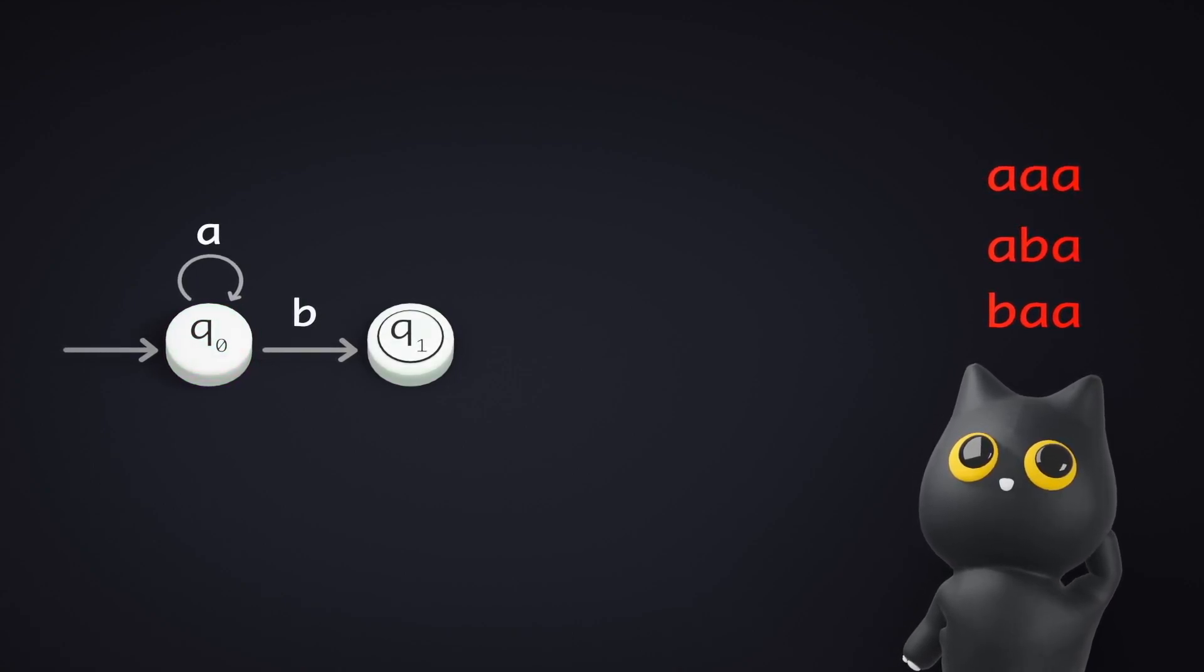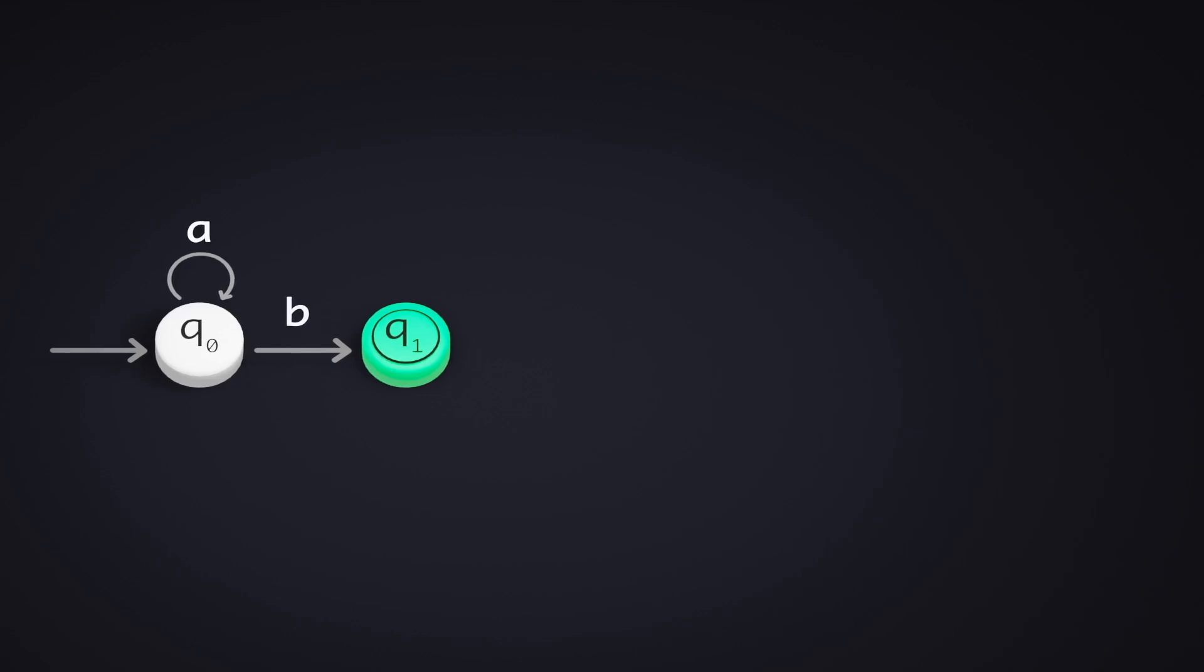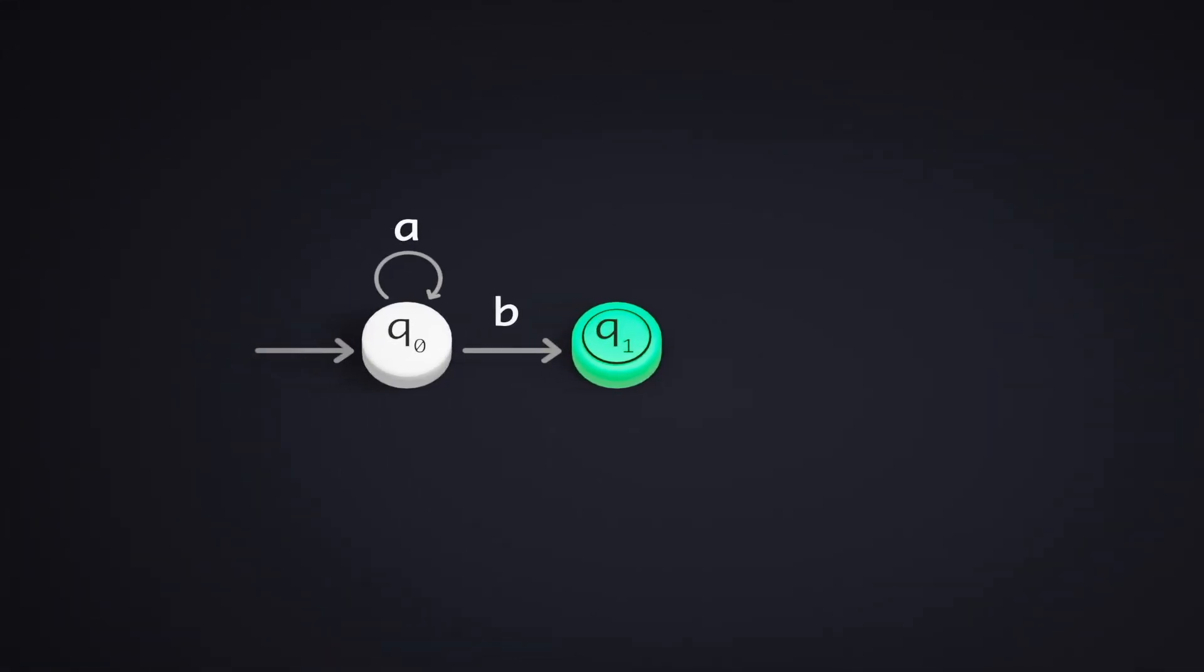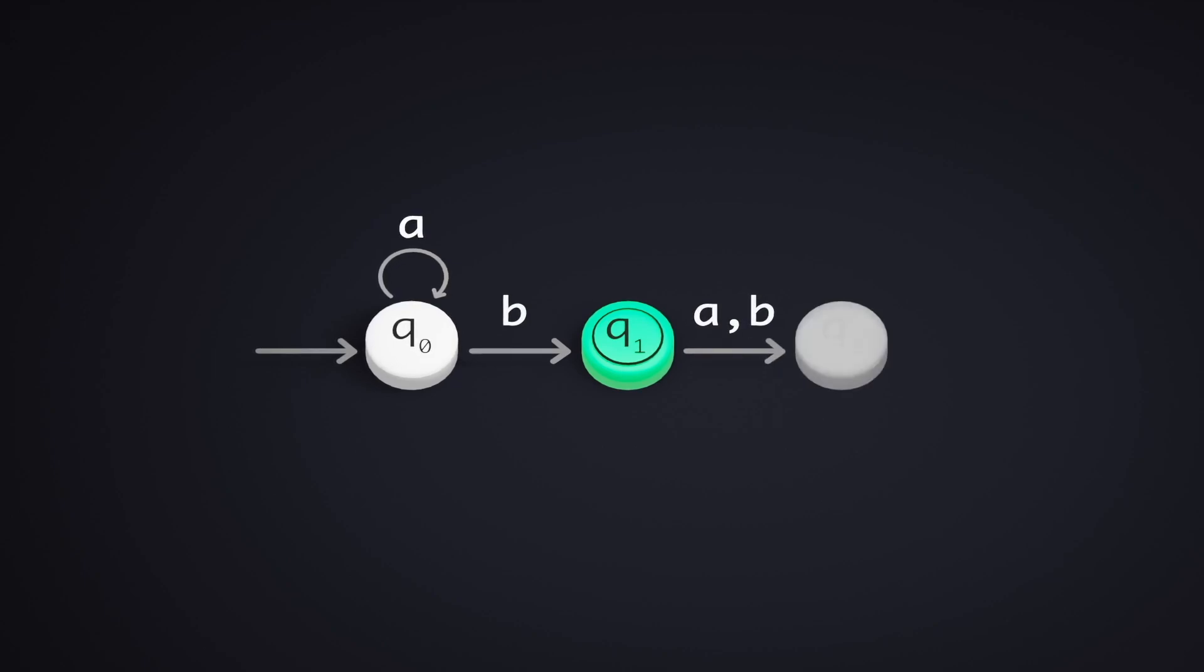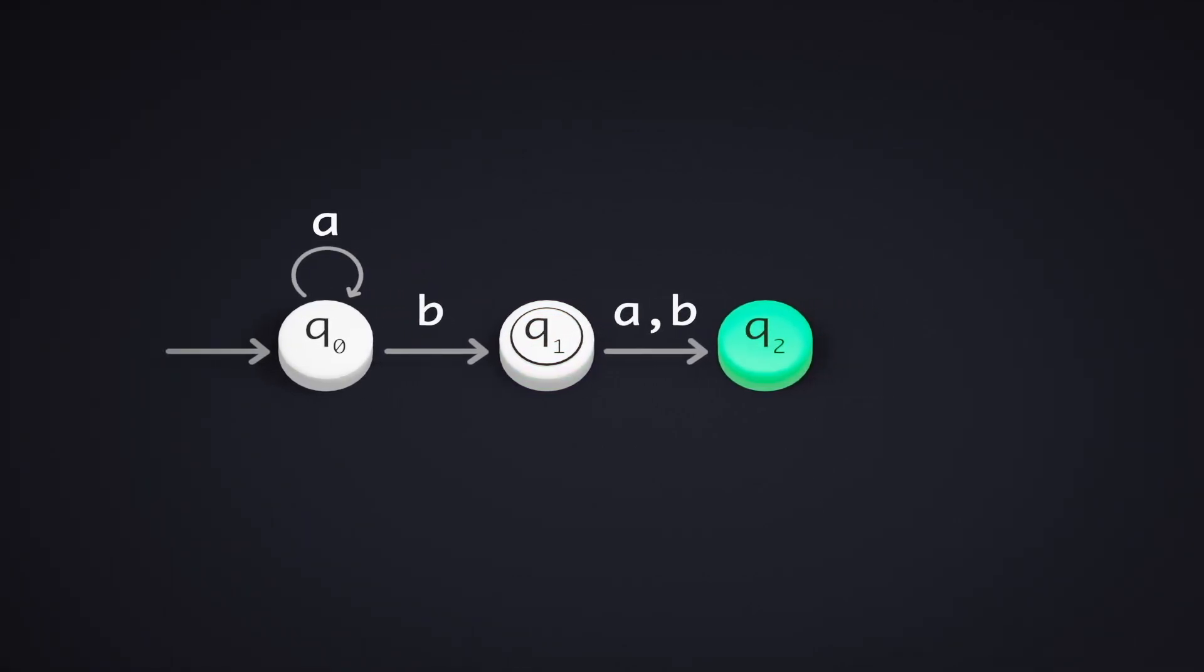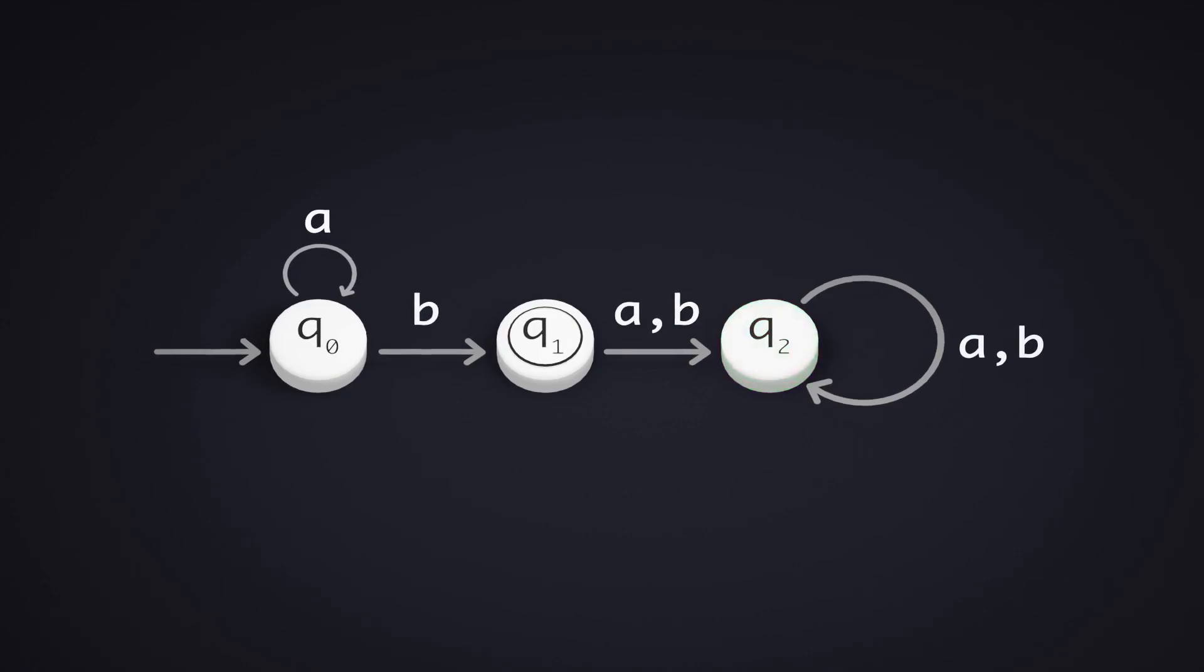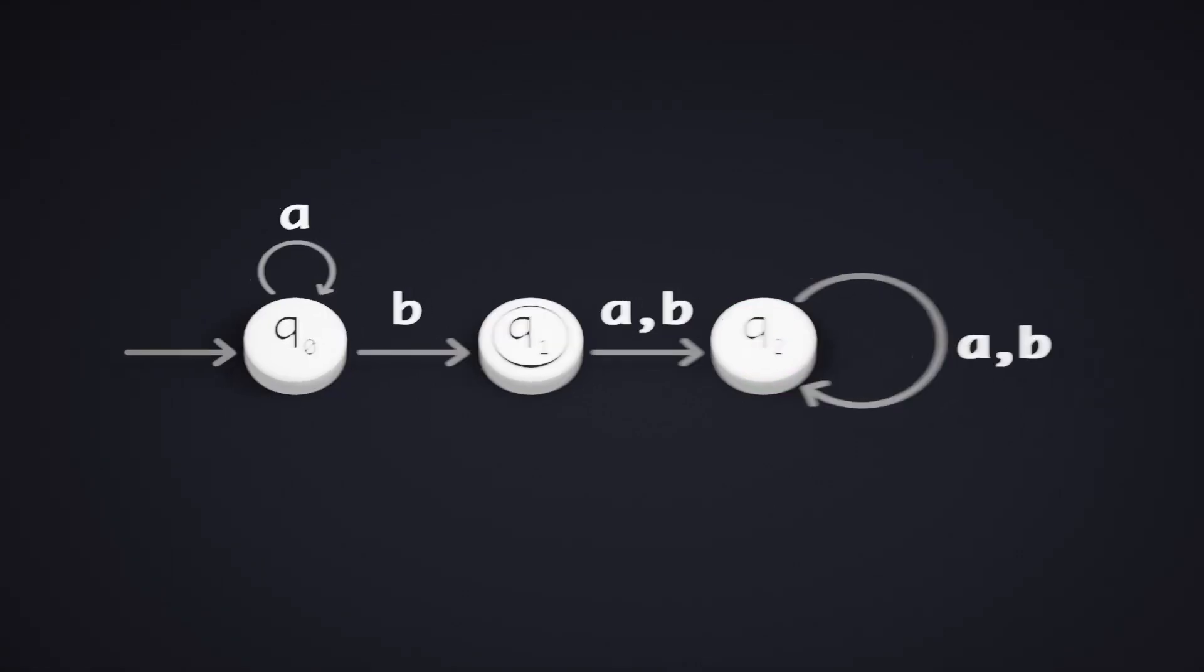So, from the accepting state, any character that comes after is rejected. Hence, for both A and B, we transition into the dead state Q2 once more. And at this state, for the two symbols A and B, we transition back into the same state too. Now, let's check our DFA with some test cases.